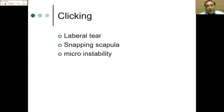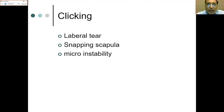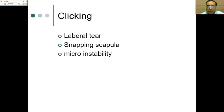Clicking is another complaint. History of injury with a sharp sudden click or catch in the shoulder points toward a labral tear. A gradual slow-growing pain along with clicking at the back of the shoulder suggests snapping scapula. Micro-instability sometimes causes clicking with no history of injury, so we need a high index of suspicion when evaluating clicking.